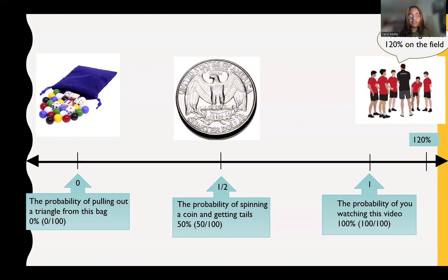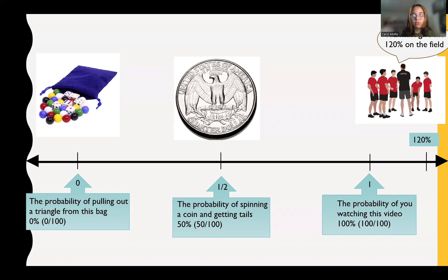Now if we look at this middle part — when we're flipping a coin, you either have two outcomes: either a head or a tail. So the probability of getting a tail is 1 out of 2. Our favorable outcome is getting a tail, so that is 1, and our total amount of outcomes is 2. So that's why we have 1 over 2, and if we convert that to a percentage, that is 50%.